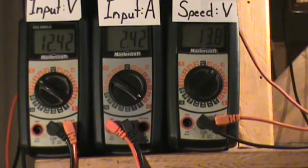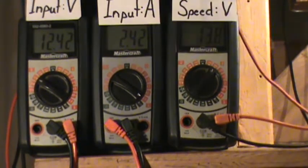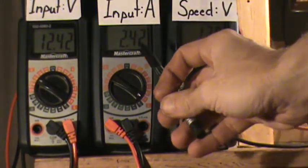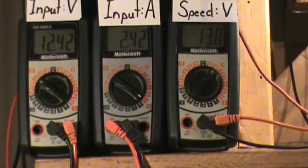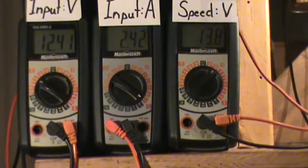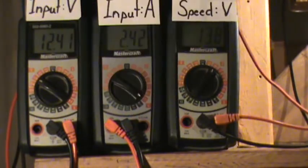So 13.8 volts on the speed. The starting battery was 12.60. Input amps: 2.42. And again, I'll consolidate all this - 12.41.